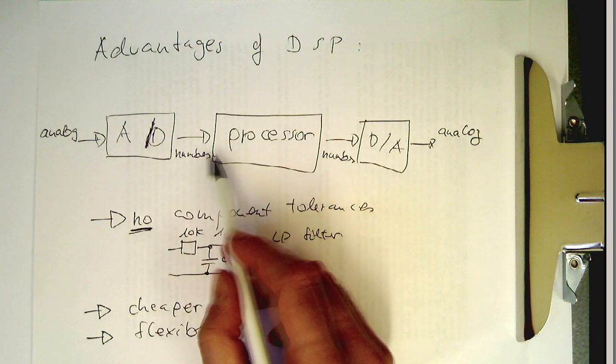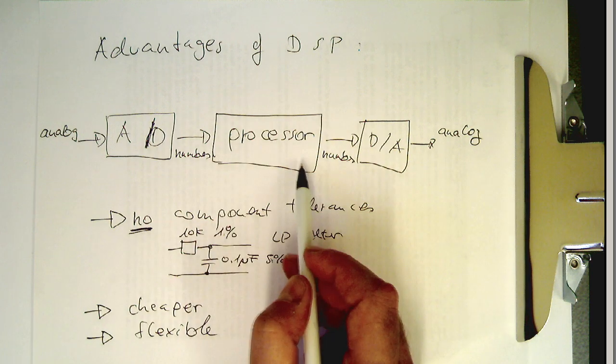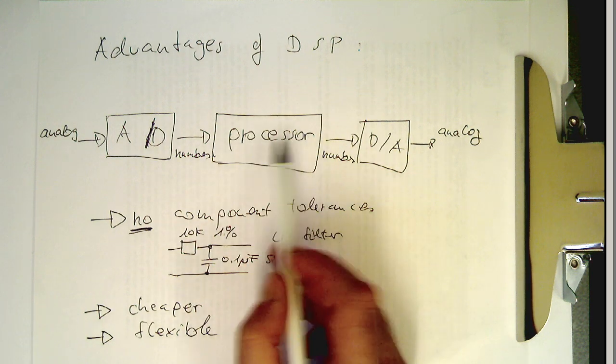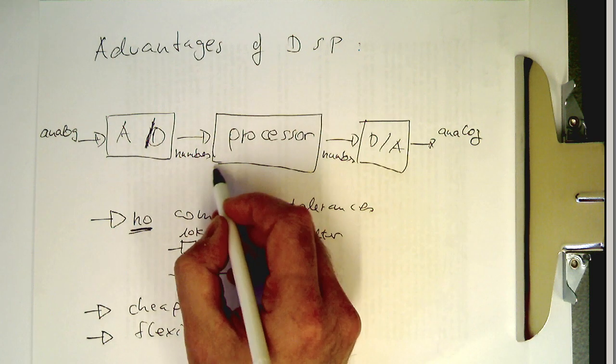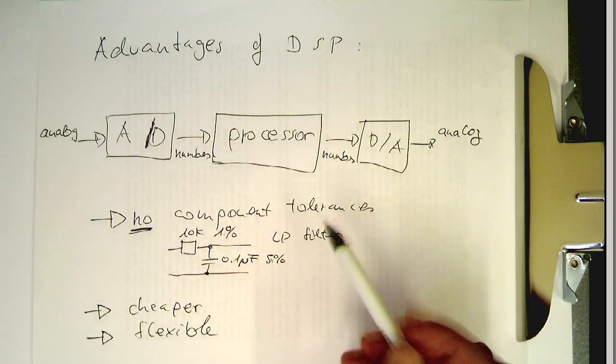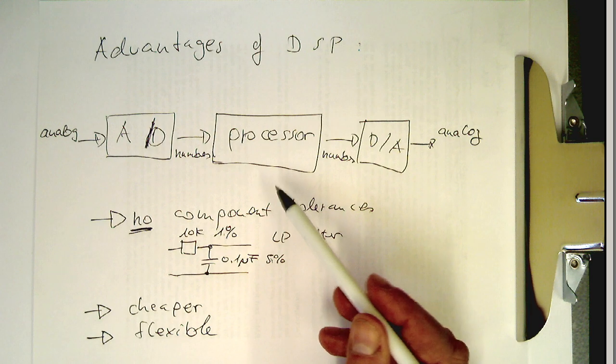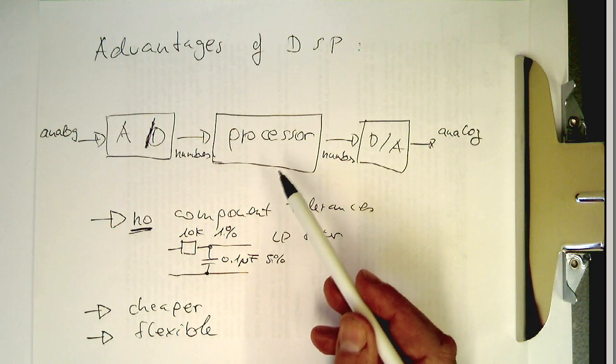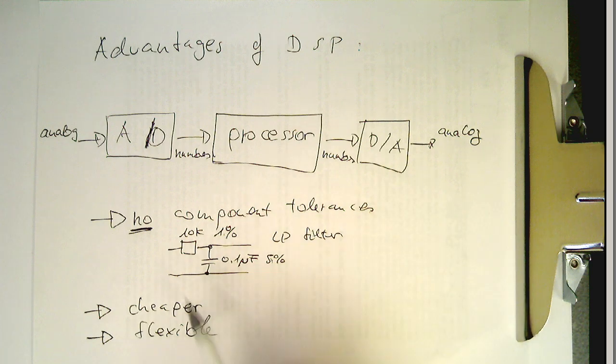We can fix bugs or improve the processing and send, for example, a customer a new firmware upgrade without modifying anything of the circuitry.